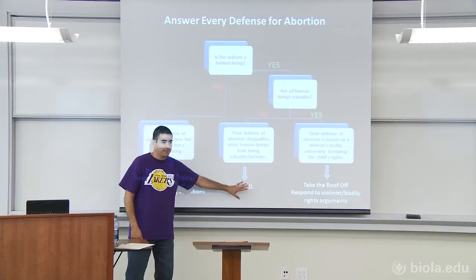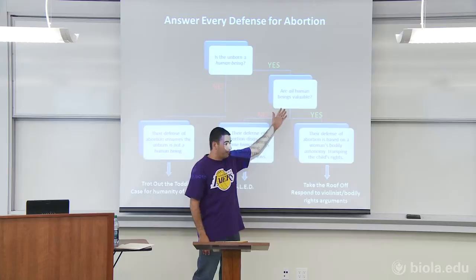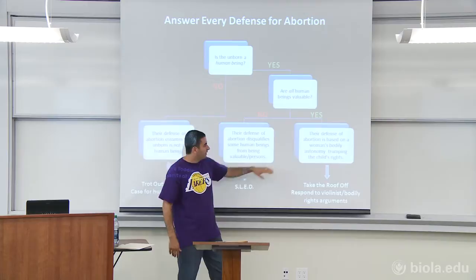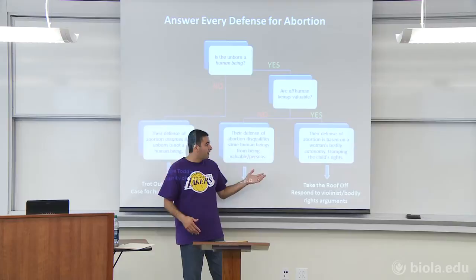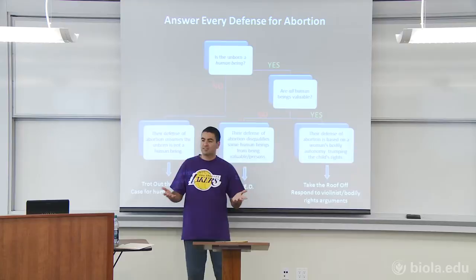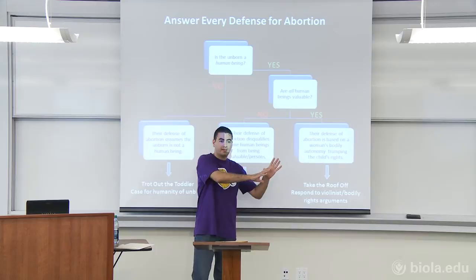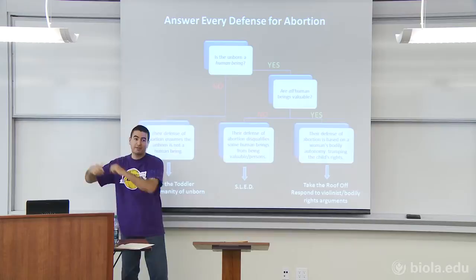If they say the unborn is a human being and they think all human beings are valuable or persons — just like Judith Jarvis Thomson or many others — then basically the defense of abortion is based on a woman's bodily rights trumping the child's rights. In that case, you use the 'take the roof off' tactic — extend the reason, which is basically reductive ad absurdum. Accept the premises of their argument, take it to its logical conclusion, show that it's absurd, therefore the rationale is absurd. That's what Scott did in many instances.